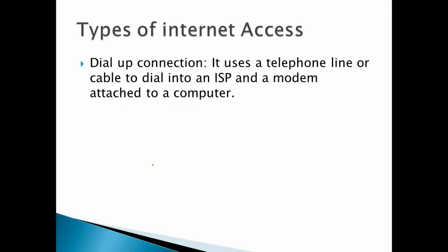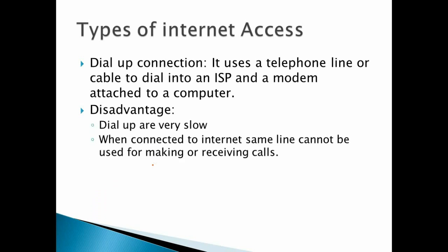Types of internet access — there are different types of internet access. First is dial-up connection: it uses a telephone line or cable to dial into the ISP, with a modem attached to the computer. The disadvantage of dial-up connections is that they are very slow. Also, when connected to the internet, the same line cannot be used for making or receiving calls. So earlier, the wires connected to the landline phone were the same connection used for internet access — if you were using internet, you could not make or receive calls.